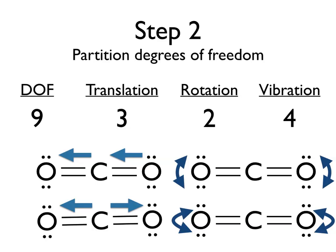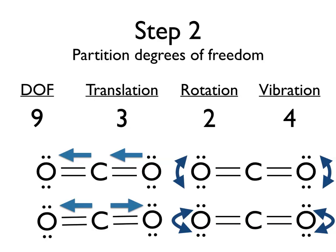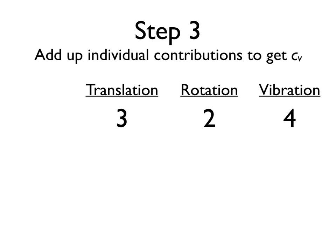Note that the phase of our molecule matters. We're looking at a gaseous CO2 molecule, and because it's a gas, it's able to freely translate and rotate in space. When you look at a solid, solids are locked in their positions in a lattice and therefore can only vibrate, which affects the way they can store energy. Now that we've partitioned our different degrees of freedom, we can add up their individual contributions to get our constant volume heat capacity.